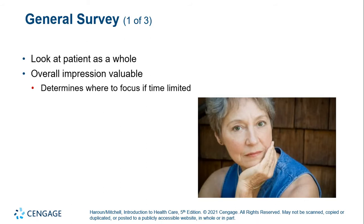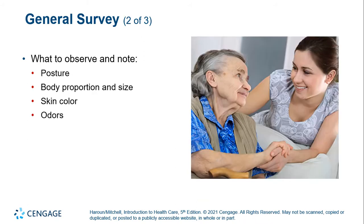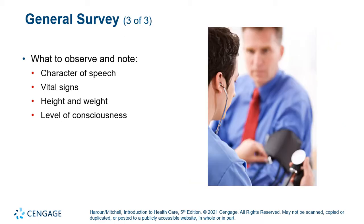When you look at a patient you're looking at the patient as a whole, and your overall impression is important. The things you may want to observe include posture, body proportion, skin color, odors, and character of speech. We'll also talk about vital signs, height and weight, and level of consciousness. It's a little bit like being a detective — gathering data so you can take care of your patient.